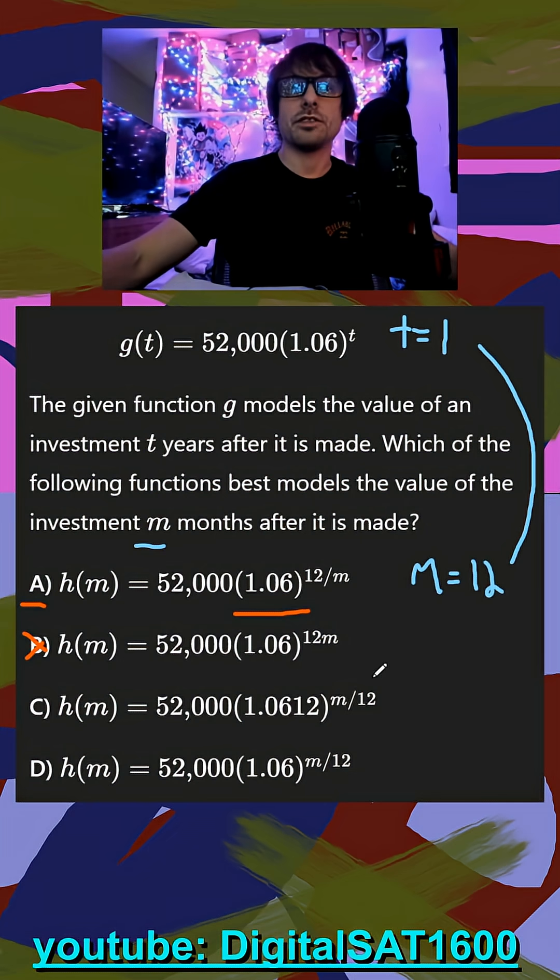In c, when I do 12 divided by 12, I get 1, but it's times 1.0612, which is a little bit different than 6%.